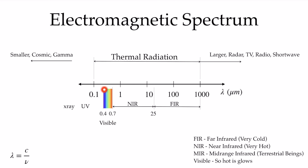A very small subset of the thermal radiation range is the visible spectrum, going from purple light at 0.4 microns up to red light at about 0.7 microns. Going to larger wavelengths, we get into the near-infrared and far-infrared — the things we see when using thermal cameras. The characteristics of our radiation depend very much on that particular wavelength, and that complicates our analysis.